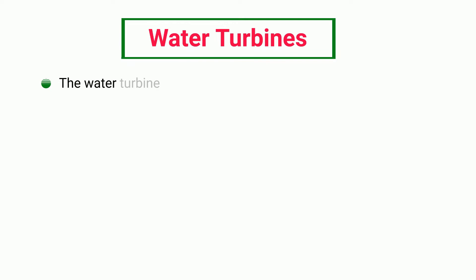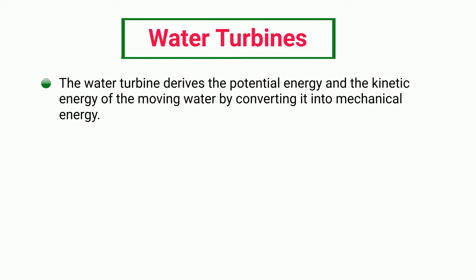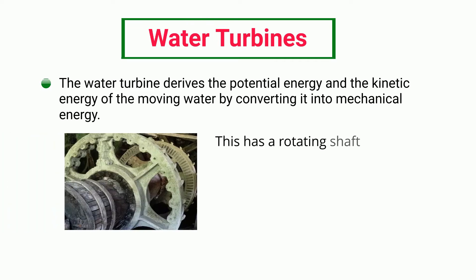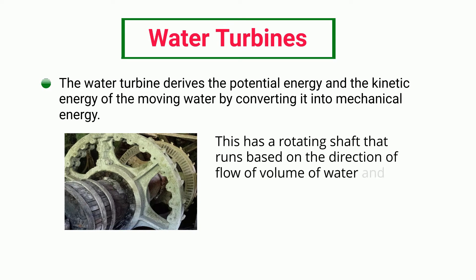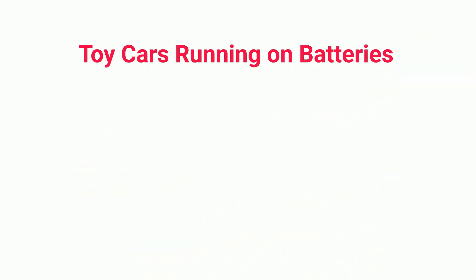Water turbines: the water turbine derives the potential energy and the kinetic energy of the moving water by converting it into mechanical energy. It has a rotating shaft that runs based on the direction of flow and volume of water, and then increases its speed.